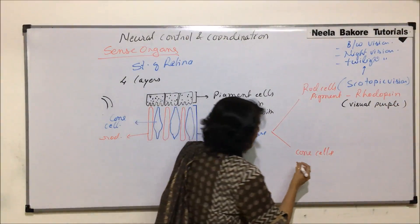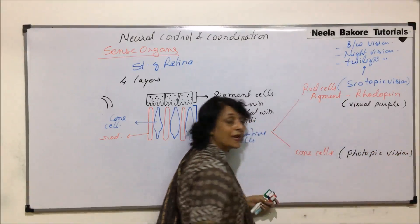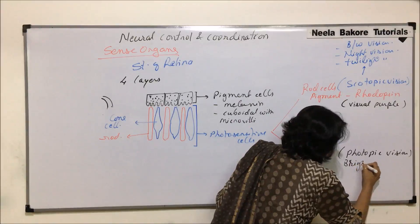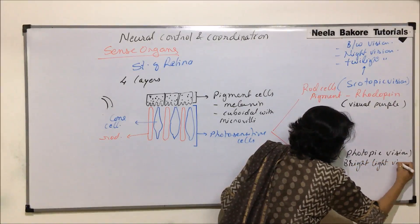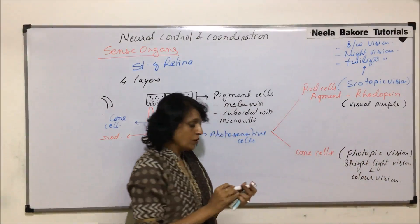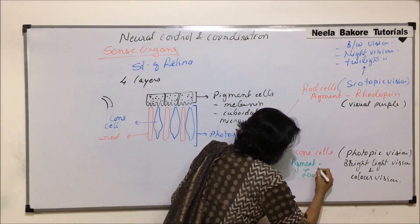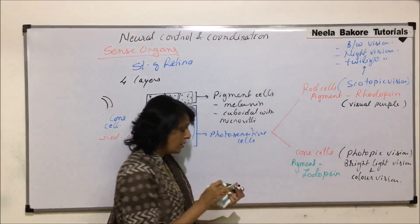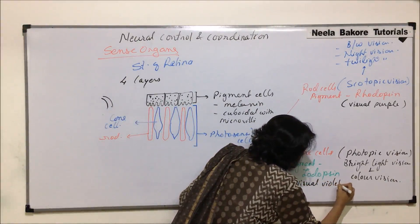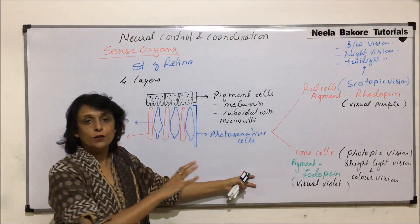Cone cells have a conical shape and are responsible for photopic vision. Photopic vision is bright light vision and color vision — they help in both bright light vision and color vision. Cone cells also have a pigment known as iodopsin, or visual violet. So rhodopsin is known as visual purple and iodopsin is known as visual violet.